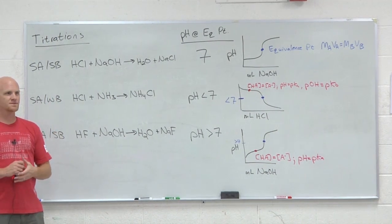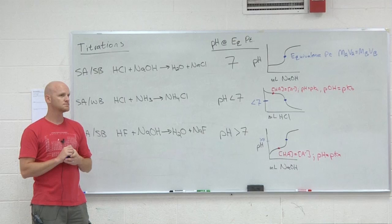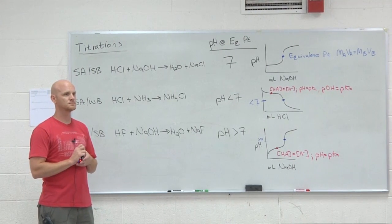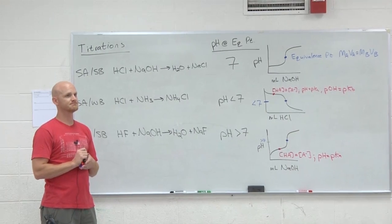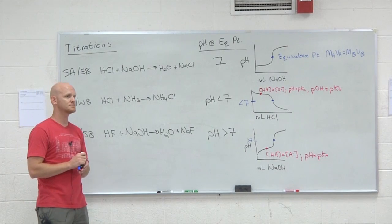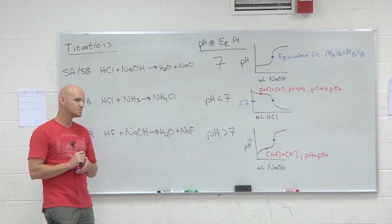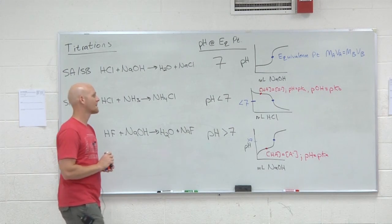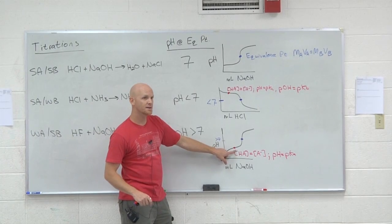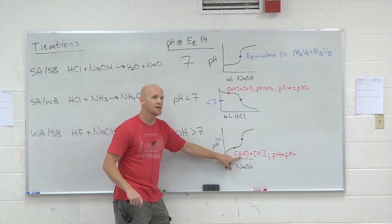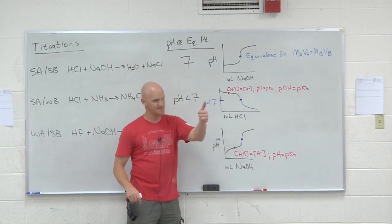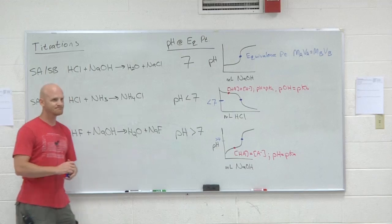Student question about buffers: the reason for the 2-to-1 ratio when making a buffer from a weak acid and strong base is that you want to reach the half-equivalence point. At that point, half the weak acid has been converted to its conjugate base, so they're present in a 1-to-1 ratio, forming a buffer.